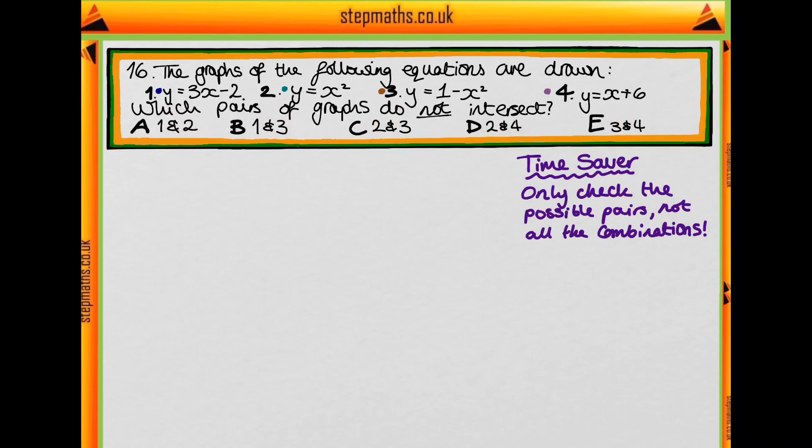Can you think about what we might use to work out whether a pair of graphs do intersect or don't? We want to know what the sign of B squared minus 4AC is. This is the discriminant, and it tells us the number of solutions that an equation has. If this is strictly greater than zero, then there will be two solutions, so we definitely have an intersection. The solutions will be the points of intersection.